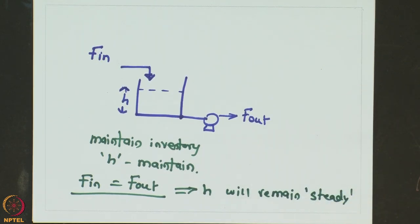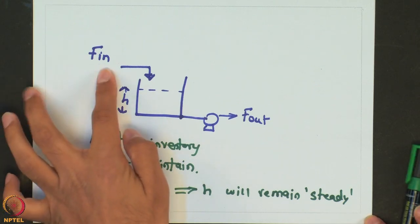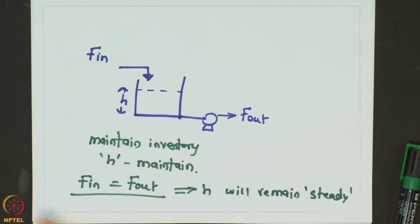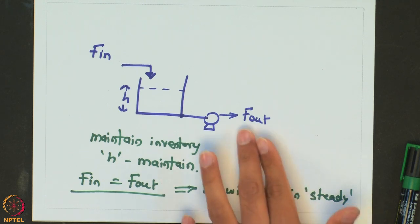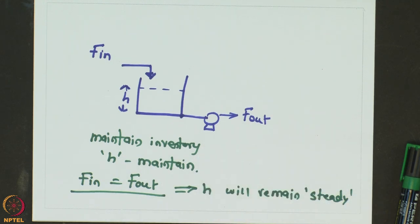Now, for such a system, typically what happens is there is no control over what comes in, so there is no way you can manipulate f_in. So if there is some disturbance in f_in and we do not do anything about the outlet flow rate, then the tank will either overflow or it will drain out as a function of time.